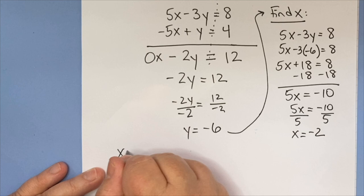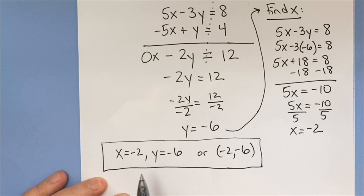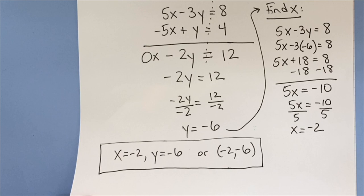So here we've got our answer. X equals negative 2, y equals negative 6, or negative 2, negative 6, depending on whether they want it written out individually like this or as an ordered pair.